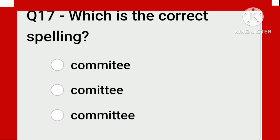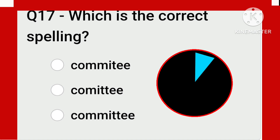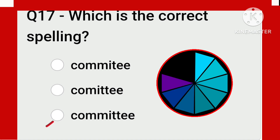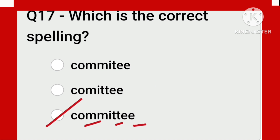Committee — it is a common word but many people make mistakes in its spelling. Remember: there are three double letters — double M, double T, double E. Committee. Only then does 'committee' form correctly. If you write any of them as single, your spelling will be incorrect.